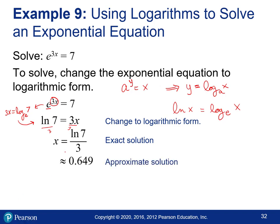If you type this into a calculator using the natural log button, you get approximately 0.649. But the exact solution is ln(7) over 3 — that's the one you want most of the time. The decimal is an approximate solution.